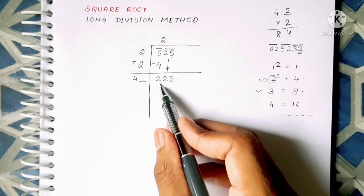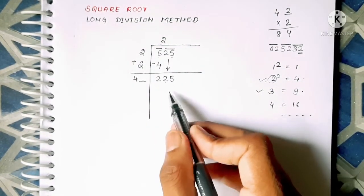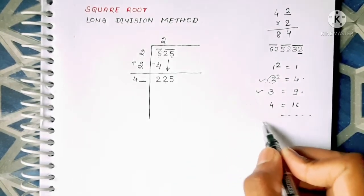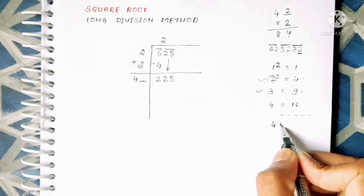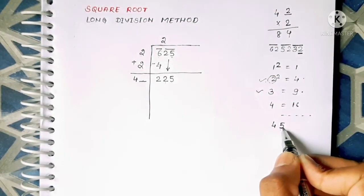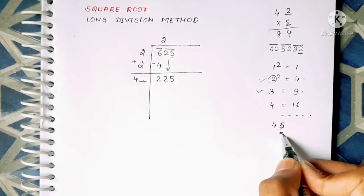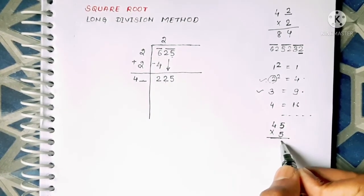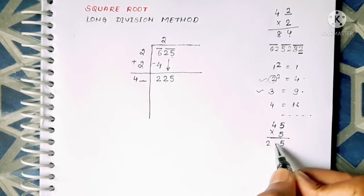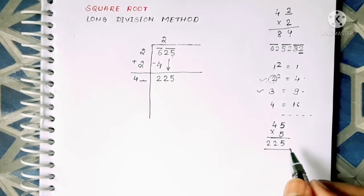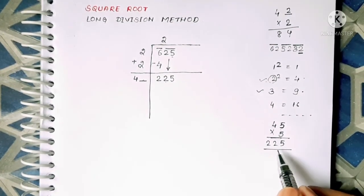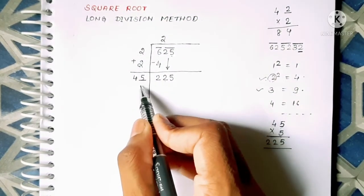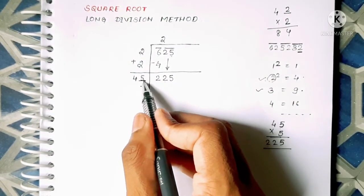So it is very much smaller than 225, hence we will take another number as - 4 into 5, we will take 5 here, then we will have to take here also and multiply it and we will get 225. So 225 we have got it so we will write that number here.